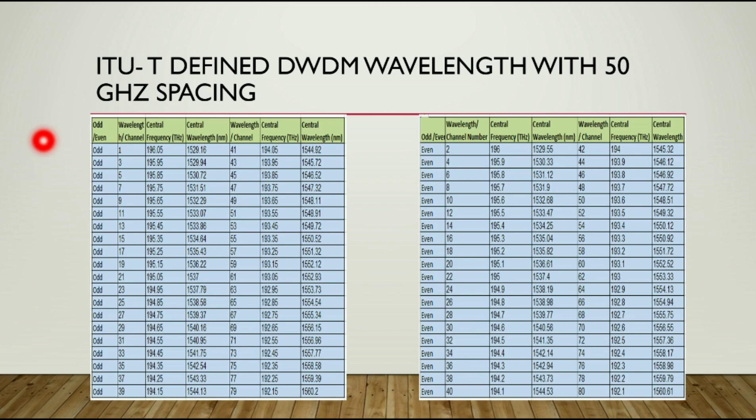Here you can see the ITU-T defined DWDM wavelengths with 50 gigahertz spacing. These are the different wavelengths we are using in the C band like 1529.16, 1529.94, 1530.72. This is the chart for the odd wavelength number and this is the chart for the even wavelength number.